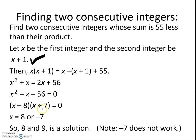And that factors quite nicely into x minus 8 times x plus 7. Setting each piece equal to 0, we find that x could be 8, or it could be a negative 7. We have to test our solutions. 8, the consecutive integer would be one more, so 8 and 9.